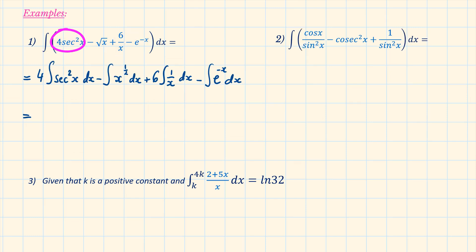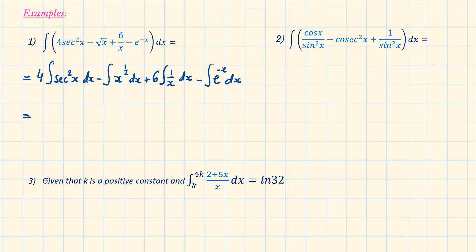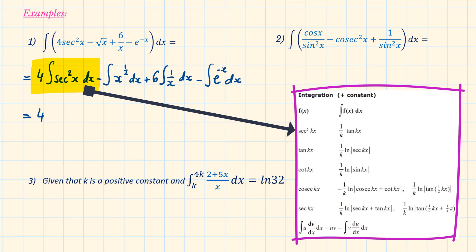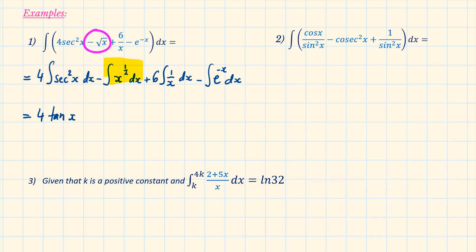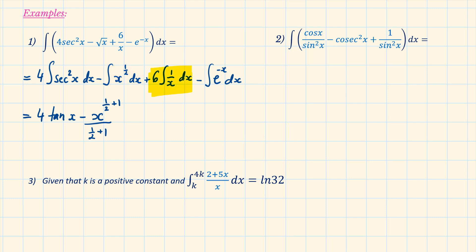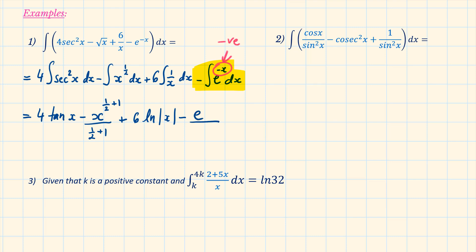The first term, 4 sec squared x, and the third term, 6 over x, have a constant in them. Any time we have a constant, we can pull it out in front of the integral — this will make the integration much simpler. The result of 4 times the integral of sec squared x is 4 tan x from tables. When we have a root, make sure you rewrite it as a power — square root of x is written as x to the power of a half. To solve the integral of x to the power of a half, we add 1 to the power and divide by the new power. The integral of 1 over x will be ln of the absolute value of x, and we also had a 6 in front of it. For the integral of e to the power of minus x, we have a minus power, so the integral is e to the power of minus x divided by the differential of minus x, which is minus 1.